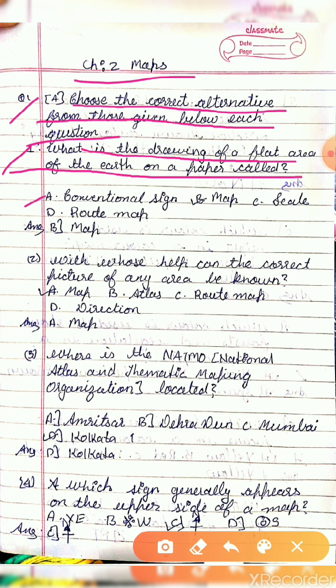Question 1: What is the drawing of a flat area of the earth on a paper called? Option A is conventional sign, option B is map, option C is scale, and option D is root map. So the answer will be B, map.